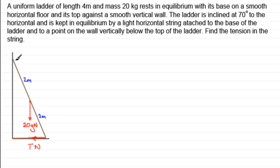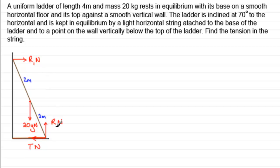There'll be a normal contact force from the wall, acting at right angles to it — call that reaction R newtons. There'll also be a contact force from the floor acting perpendicular to the floor, i.e., upwards. I'd normally call both reactions R, but since they're different I'll call them R1 (from the wall) and R2 (from the floor). There are no other forces because it's a smooth wall and smooth floor — no frictional forces at either contact point.